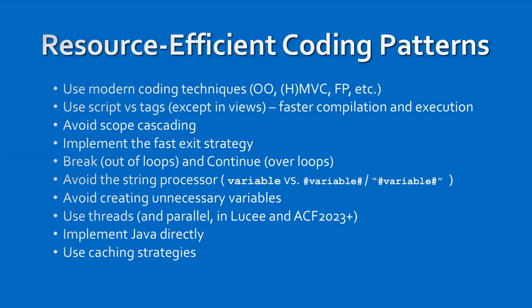Avoid creating unnecessary variables. Use threads as well as async and parallel. In Lucee — any version — and now in ACF 2023, there is a parallel option when looping over things and other ways to use parallelization. Implement Java directly — in most cases Java will be faster than ColdFusion, and you can implement it pretty easily to save processing time and power. And obviously use caching strategies that help return results quicker when you have complex calculations. You don't want a thousand people hitting that at the same time — you want one person hitting it and 999 others enjoying the cached result.